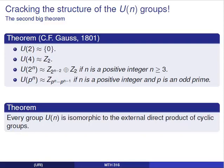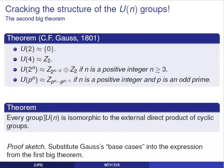With this theorem and the one on the previous slide, we can show that every group U(n) is isomorphic to the external direct product of cyclic groups. The theorem on the previous slide said that if you break n down into a product of prime powers, then U(n) is isomorphic to an external direct product of U of each of those factors. Gauss's theorem tells us how to handle U of a prime power, so combining these gives the result.